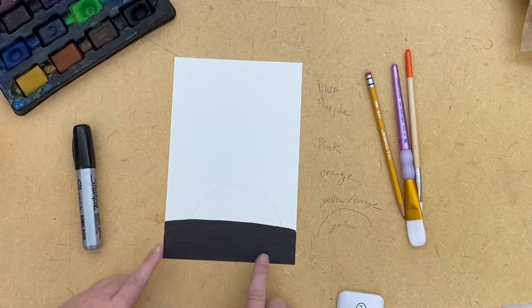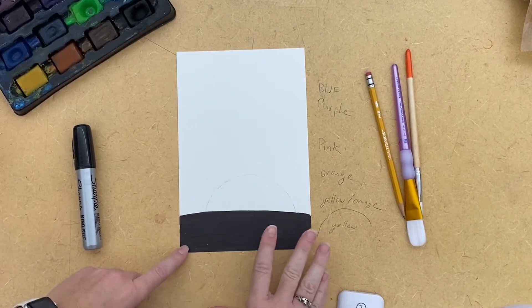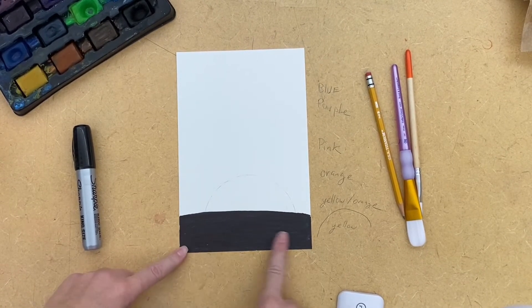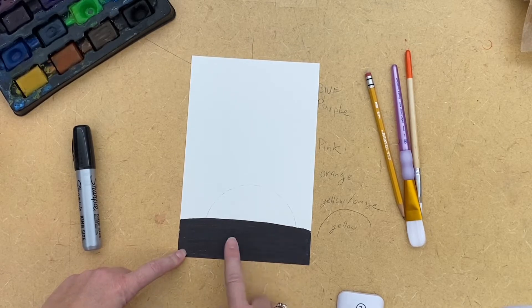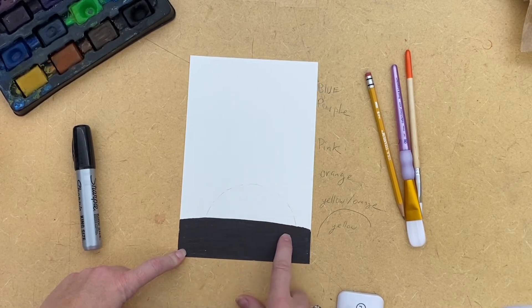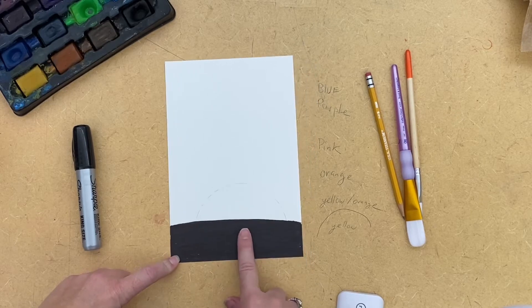For my design, I really didn't spend much time because it's just a demo video, but your silhouette, whatever you decide to draw, is going to be completely black. And then whether you have a sun or you're not going to do a sun, it's still the same technique.